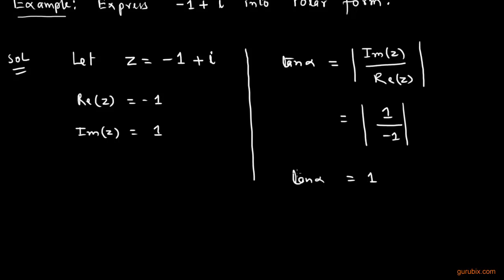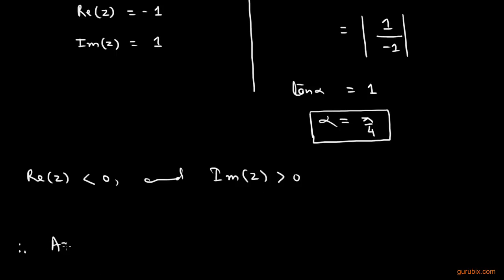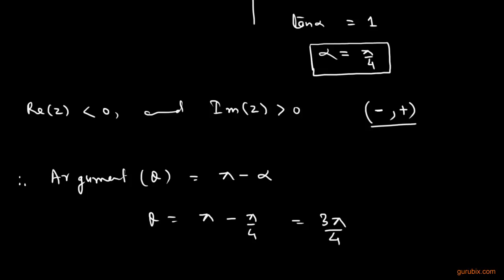Therefore tan α equals 1, which implies that α equals π by 4. Now we observe that the real part of the complex number is negative and the imaginary part is positive. Therefore the argument θ equals π minus α, because the point representing the complex number lies in the second quadrant. This means θ equals π minus π by 4, which gives 3π by 4.